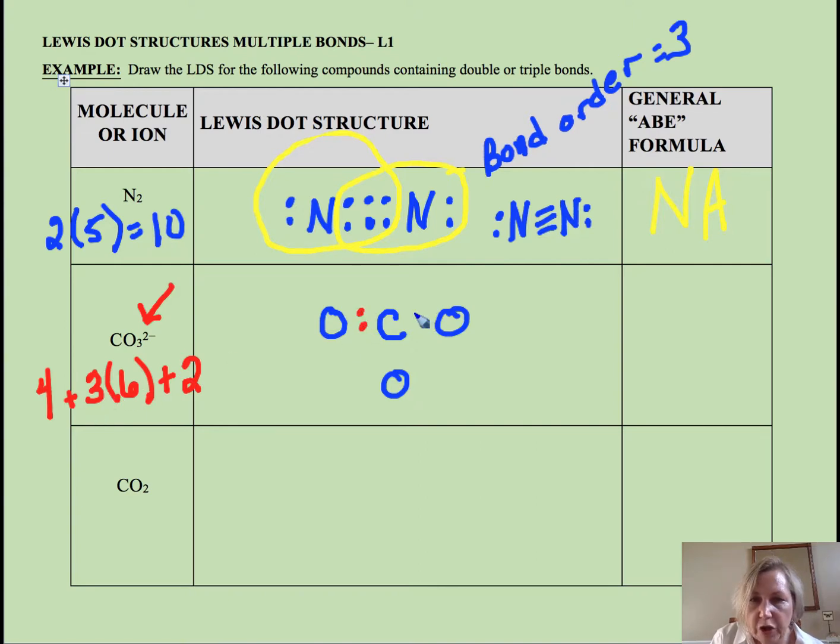All right so we have 18, 24. So make your bonds. Two, four. You can use lines if you want. I use dots just to make sure you're able to count your electrons well. Two, four, six, eight, ten, twelve, fourteen, sixteen, eighteen, twenty, twenty-two, twenty-four.